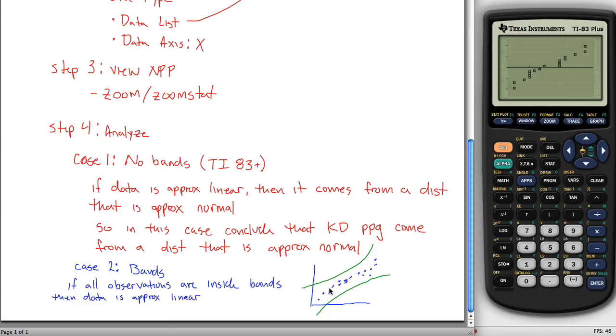If all observations are inside the bands, then data is approximately linear. The cutoffs for these points falling in a straight line are these green bands. If we had a dot outside of these green bands, we would say it's not linear. But in this case, they're all inside so we say it is linear. And if our data is approximately linear, then our data comes from a distribution that's approximately normal.